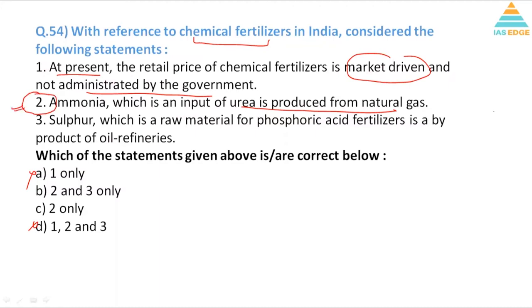Sulfur, which is a raw material for phosphoric acid fertilizer, is a byproduct of oil refinery. So that is also true. Again a factual question. If you have read the science in NCERT properly, you'll be able to solve it.